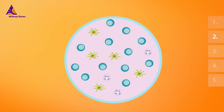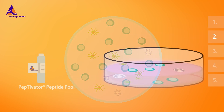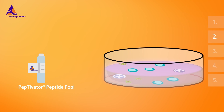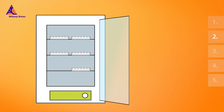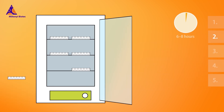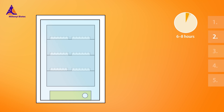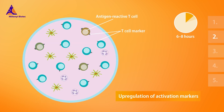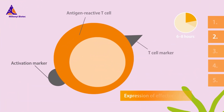After taking the cells in culture, add a peptivator peptide pool to stimulate the T-cells reactive to your antigen of interest. Incubate your cells for six to eight hours. During this time, antigen-reactive T-cells will up-regulate specific activation markers and express cytokines.